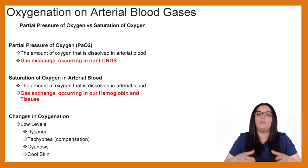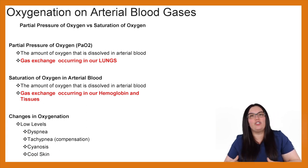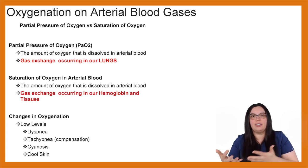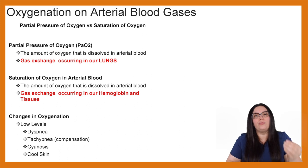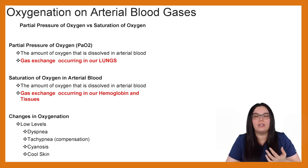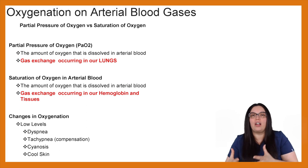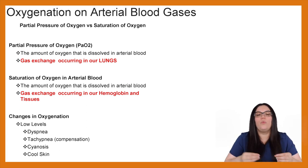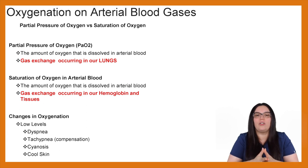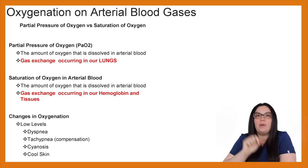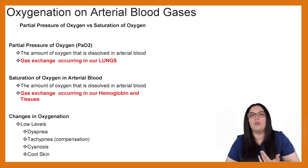Let's talk about the difference when it comes to partial pressure of oxygen versus saturation of oxygen. When it comes to both, it's really the amount of oxygen dissolved in arterial blood. But partial pressure of oxygen, or PaO2, is the gas exchange that occurs within our lungs, versus saturation of oxygen, which is the gas exchange that occurs in our hemoglobin and our tissues. PaO2 is what you get on the ABG, whereas saturation of oxygen is what you get on the finger probe — that's the gas exchange occurring with the hemoglobin and tissue.